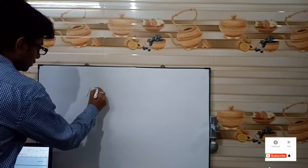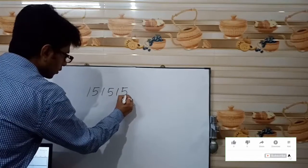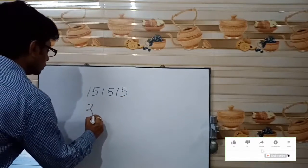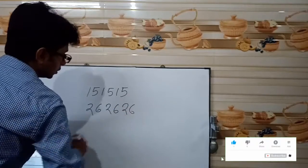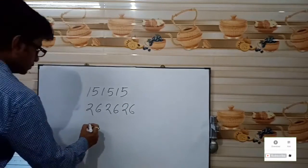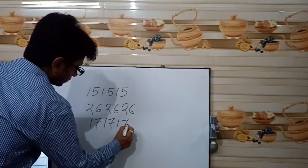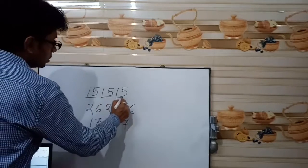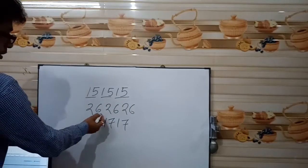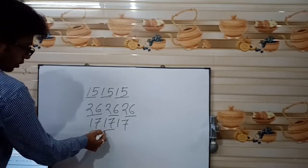Now rule number two. So viewers: 1-5, 1-5, 2-6, 2-6, and 1-7, 1-7. These are the digit-pair patterns to check for this divisibility rule.